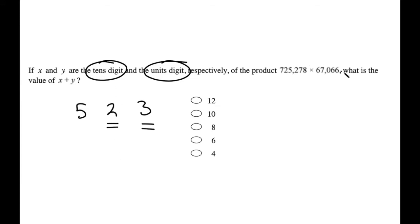So this problem is actually very straightforward. It's just saying, when I multiply these together, what's the tens digit? What's the units digit? And then I'm going to add them together.